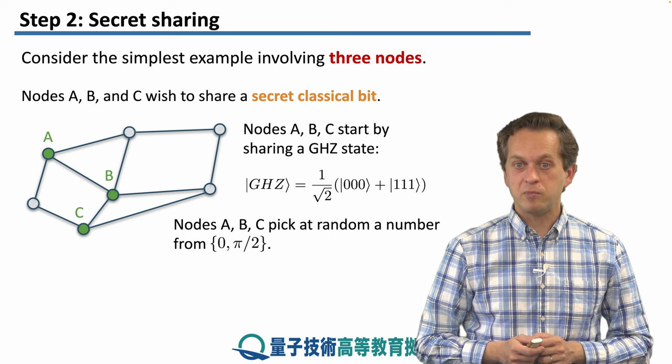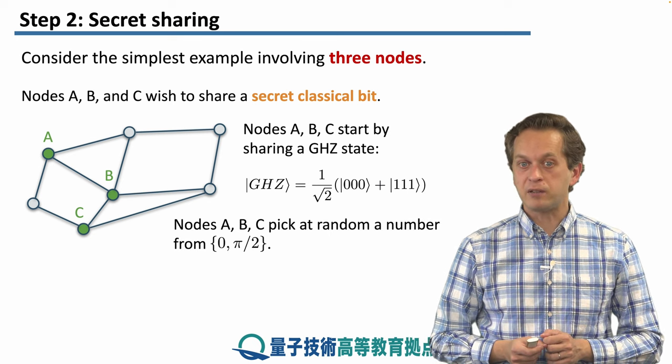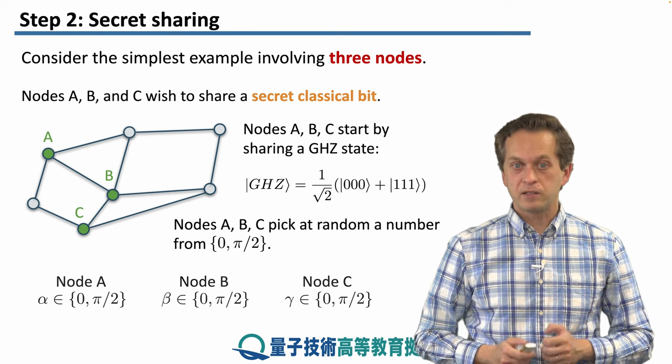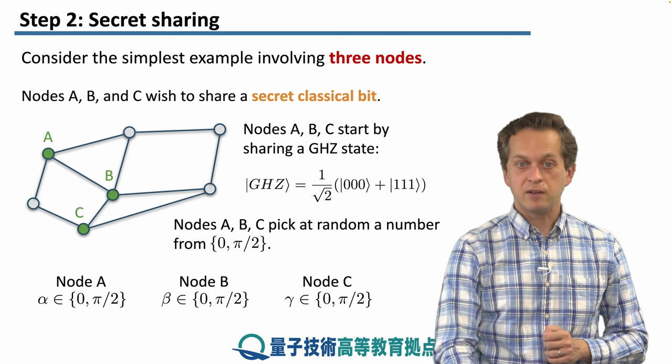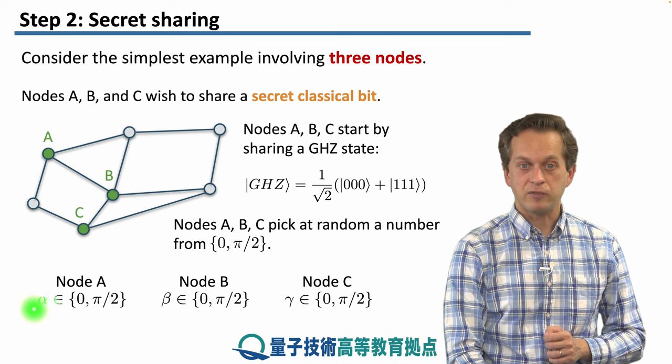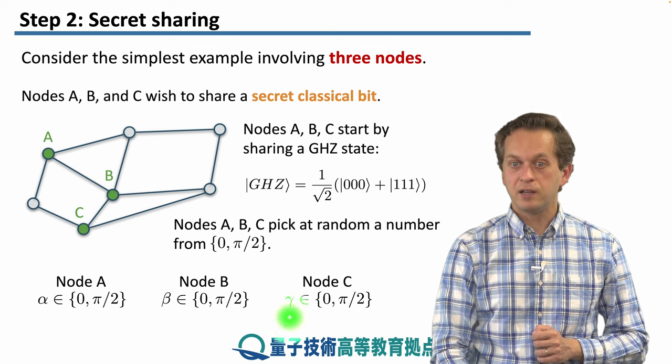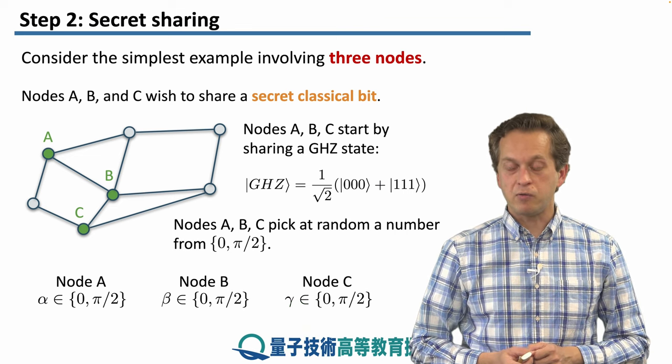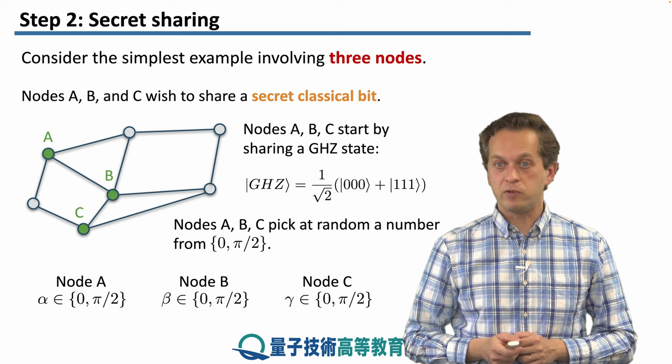Then nodes A, B, and C, they pick at random a number from the set zero or π/2. So each will have a random number. Node A will have α, node B will have β, and node C will have the random number γ. And all of these numbers, α, β, γ, will be either zero or π/2.